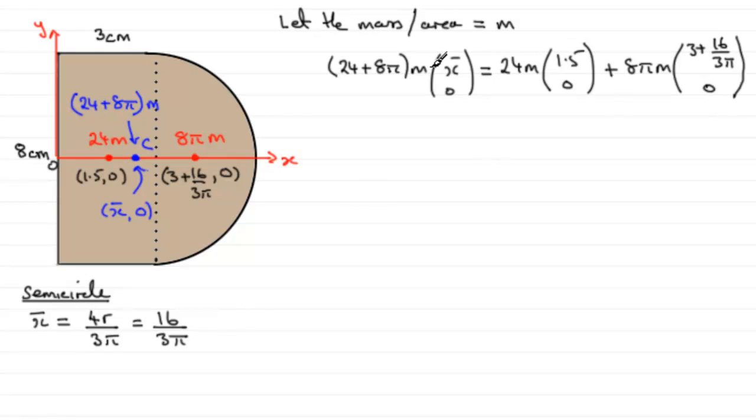Now, when we look at this, the m's cancel. They're in every term. And so we end up with (24 + 8π) multiplied by (x bar, 0) equals—if you do 24 times 1.5 plus 8π times (3 + 16/3π), you should find that you end up with (154.064..., 0).